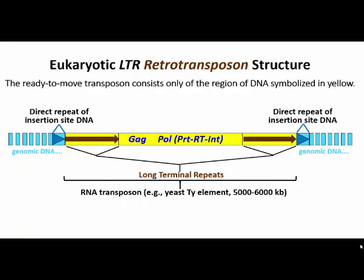The yeast element is shown here as it would exist integrated into cellular genomic DNA. Like other transposons, active eukaryotic retrotransposons leave direct repeats of genomic DNA flanking the element after transposition. TY is an example of an LTR retrotransposon. These transposons are characterized by having long terminal repeat sequences, about 300 base pairs, flanking the genes in the element. The latter encode protein factors or enzymes required for transposition.